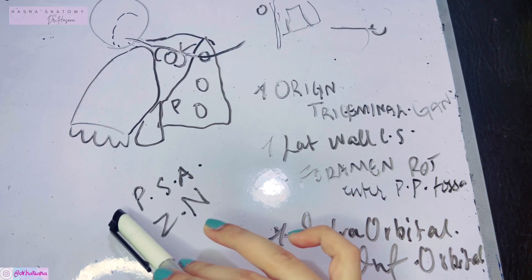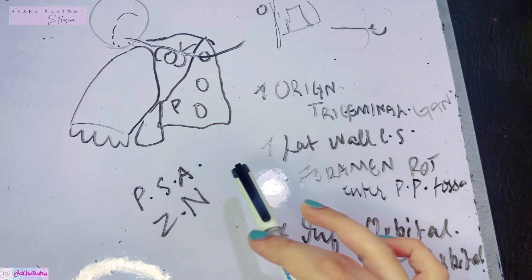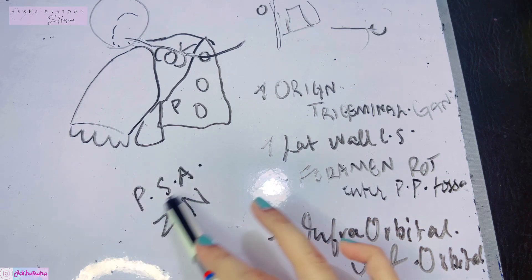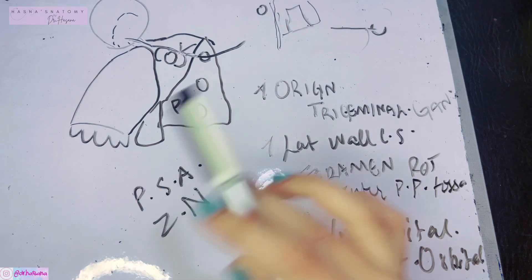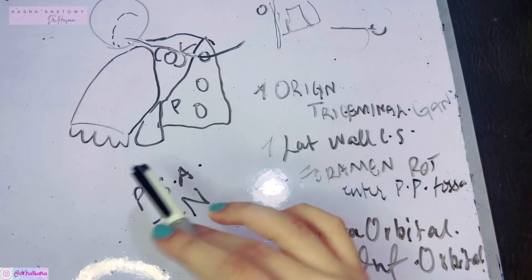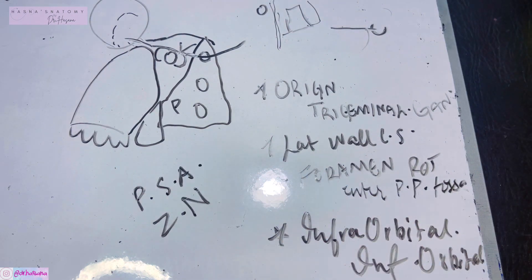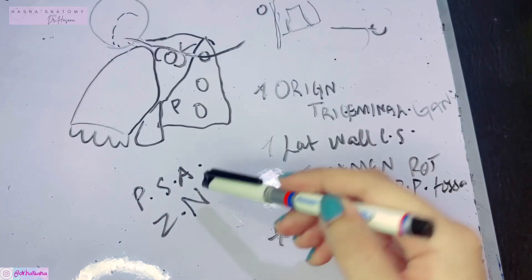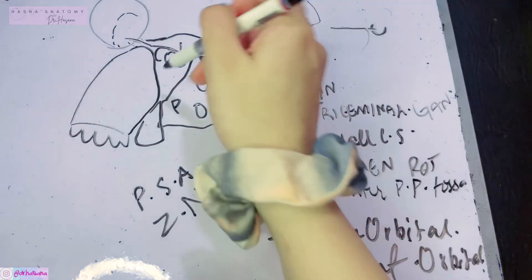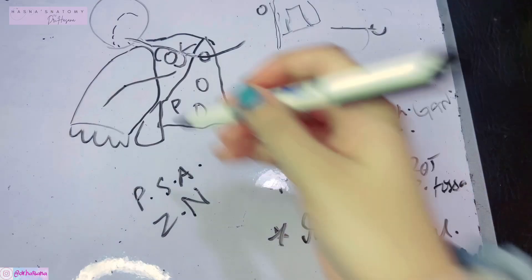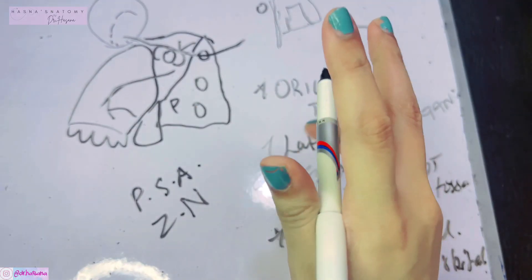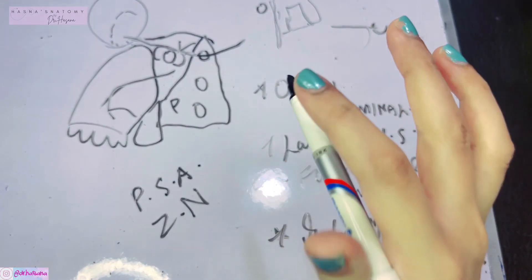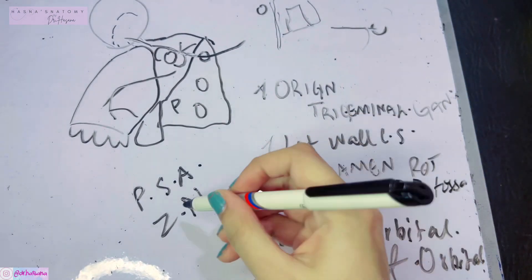These nerves basically accompany the artery of the same name — the posterior superior alveolar nerve accompanies the posterior superior alveolar artery of the maxillary artery. This posterior superior alveolar nerve goes into the maxilla and supplies the upper molar teeth, because it is superior and posterior — which makes sense.